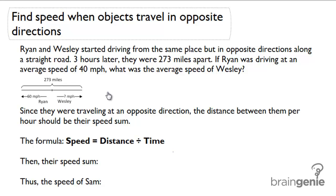Find speed when objects travel in opposite directions. Ryan and Wesley started driving from the same place but in opposite directions along a straight road. Three hours later they were 273 miles apart. If Ryan was driving at an average speed of 40 miles per hour, what was the average speed of Wesley?